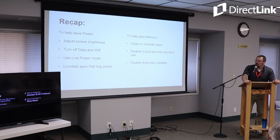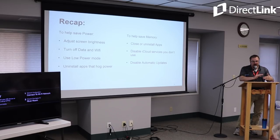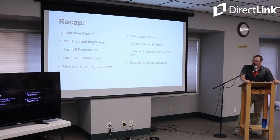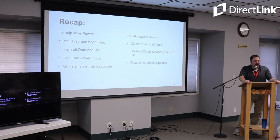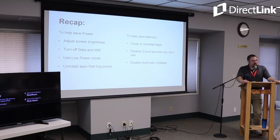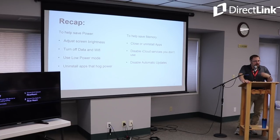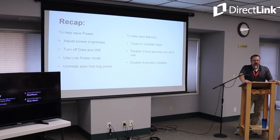To recap what we talked about today: we talked about how to adjust screen brightness using the slider in the Control Center — brighter means more visible but uses more battery, so find a comfortable mix. Turn off data and Wi-Fi if you don't need it, like if you're flying somewhere — otherwise it'll keep scanning. Use Low Power Mode: if you get to 20% and the phone asks, say yes. Or if you forget your charger for a weekend at sea, turn it on proactively. And uninstall any apps that are hogging power or behaving weird — try reinstalling if you still want the app.